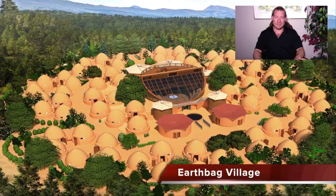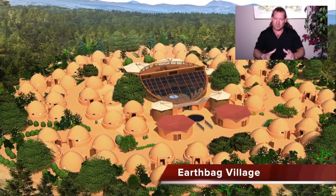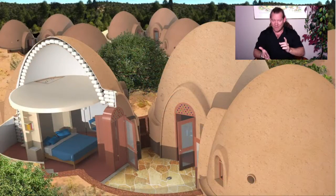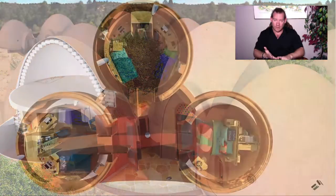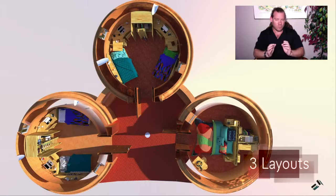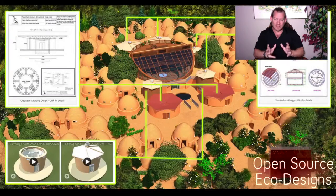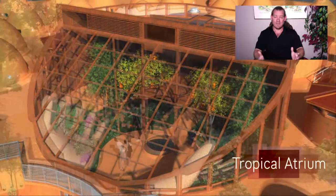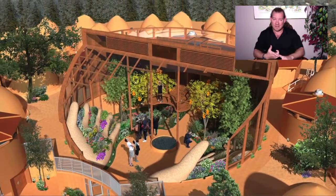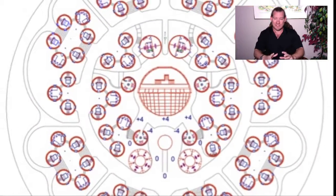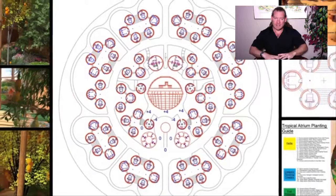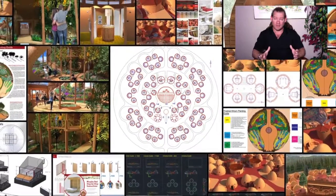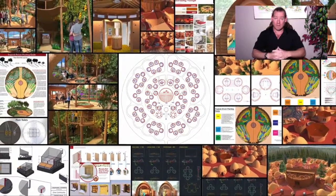Everything that you see happening in the background here is our process — this is what we're creating. We're creating open source blueprints, tools, tutorials, and resources because we believe that we've come to the point in history where we have the technology, the know-how, and enough people with the will that we can create a world that works for everybody. We can design a model for ecological human progress that people will get excited about for selfish reasons.